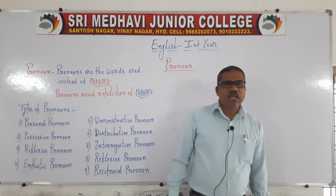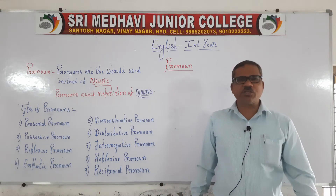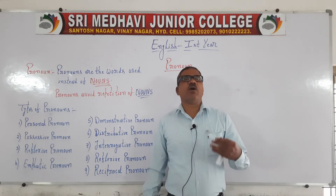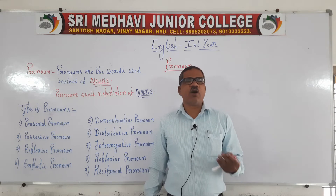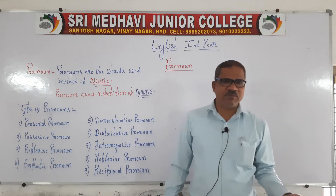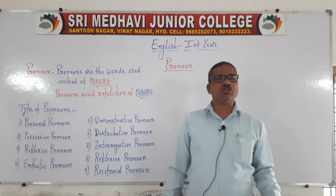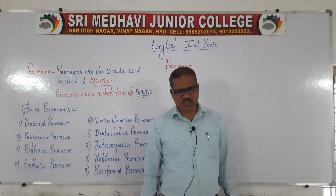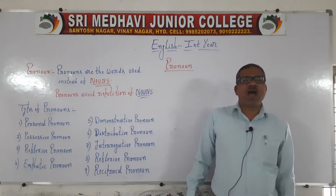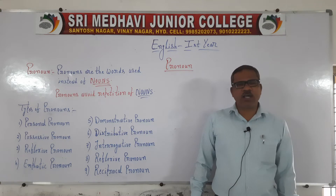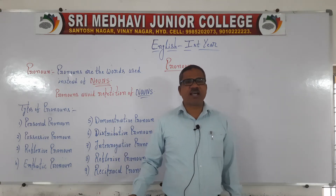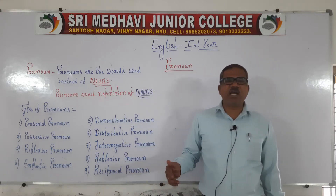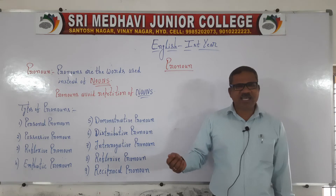If I want to speak about a person, there is no problem using a noun. But if I want to speak about five to ten students' names, it becomes difficult to use the nouns continuously. For example: Ram is a good boy, Ram is a clever student in the class, Ram scores 98 percent. In these three cases I am continuously using 'Ram'.